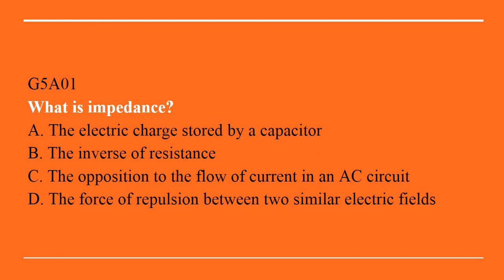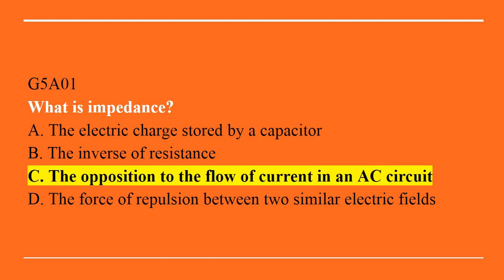G5A01 says: what is impedance? A. The electrical charge stored in a capacitor. B. The inverse of resistance. C. The opposition to the flow of current in an AC circuit. Or D. The force of repulsion between two similar electric fields. Answer is C: the opposition to the flow of current in an AC circuit.